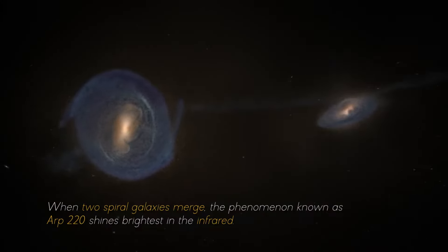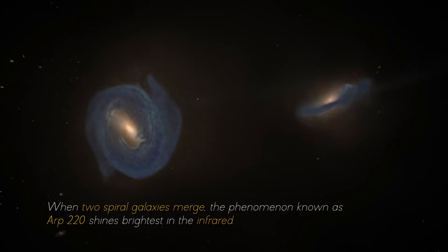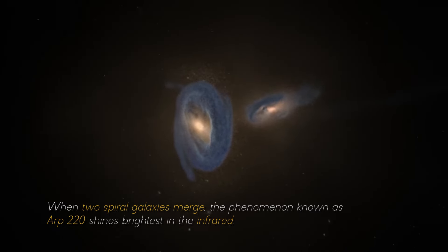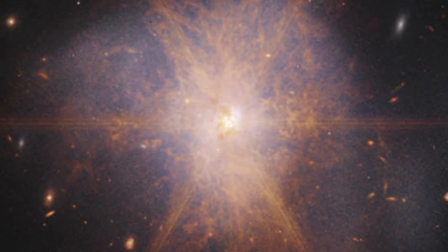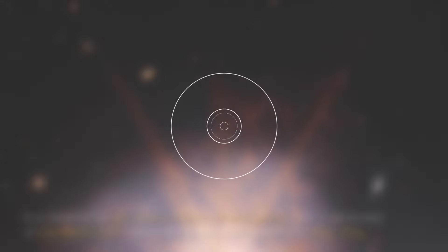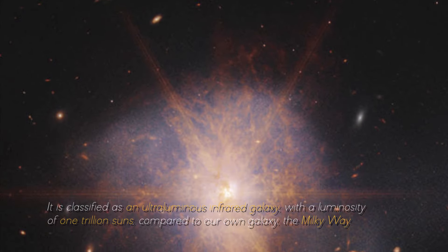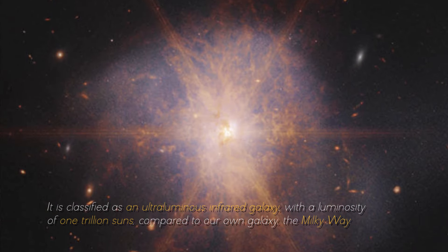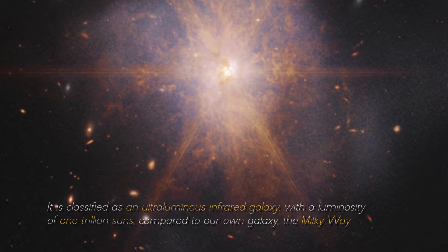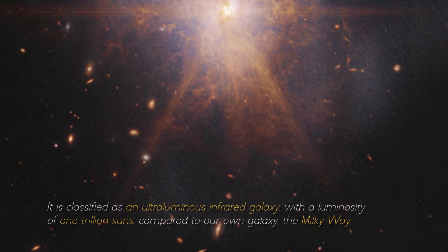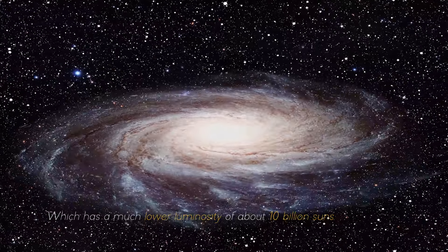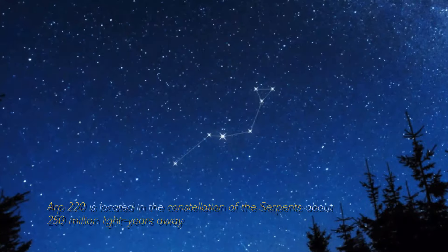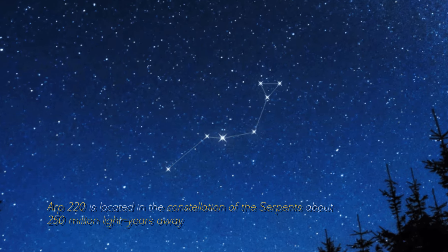This impressive galactic merger can be seen shining among other galaxies in the night sky. When two spiral galaxies emerge, the phenomenon known as ARP 220 shines the brightest in the infrared, making it perfect for observation by the James Webb Space Telescope. It is classified as an ultra-luminous infrared galaxy, with a luminosity of 1 trillion suns compared to our own galaxy, the Milky Way, which has a much lower luminosity of about 10 billion suns.